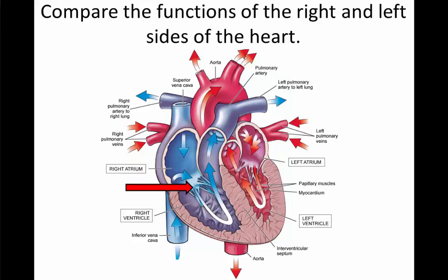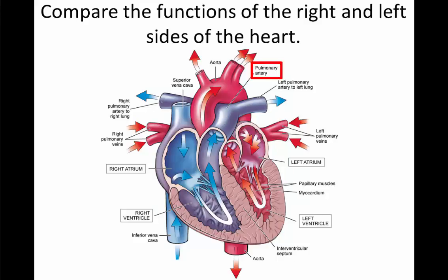The blood flows down from the right atrium through the tricuspid valve into the right ventricle. When the ventricles contract, the blood from the right ventricle moves up through the pulmonary semilunar valve up into the pulmonary artery. There's a right pulmonary and left pulmonary artery that lead to the right and left lung. The term 'pulmonary' refers to lungs, and so the pulmonary arteries are the arteries going out from the heart towards the lungs.